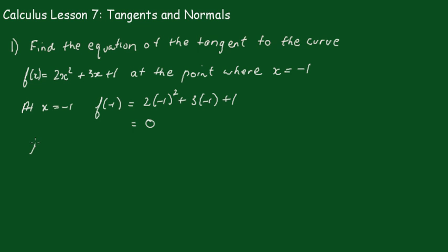Now, let's work out the gradient of the tangent at x equals minus 1. We have to differentiate this function and that gives me, according to the rule, 2 comes down, that's 4x plus 3, so f'(-1), we get minus 4 plus 3 which equals negative 1.